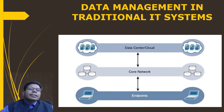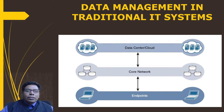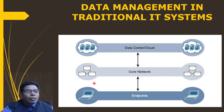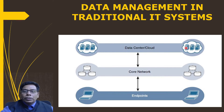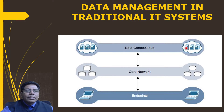Data management in traditional IT systems is straightforward. We have endpoints — printers, laptops, IP phones, and so on — connected over a core IP network to the data center or cloud. The endpoints communicate over this IP core network to servers in the cloud, and data is generally stored in the data center or cloud. Physical links from access to core typically have high bandwidth, so access to IT data is quick.